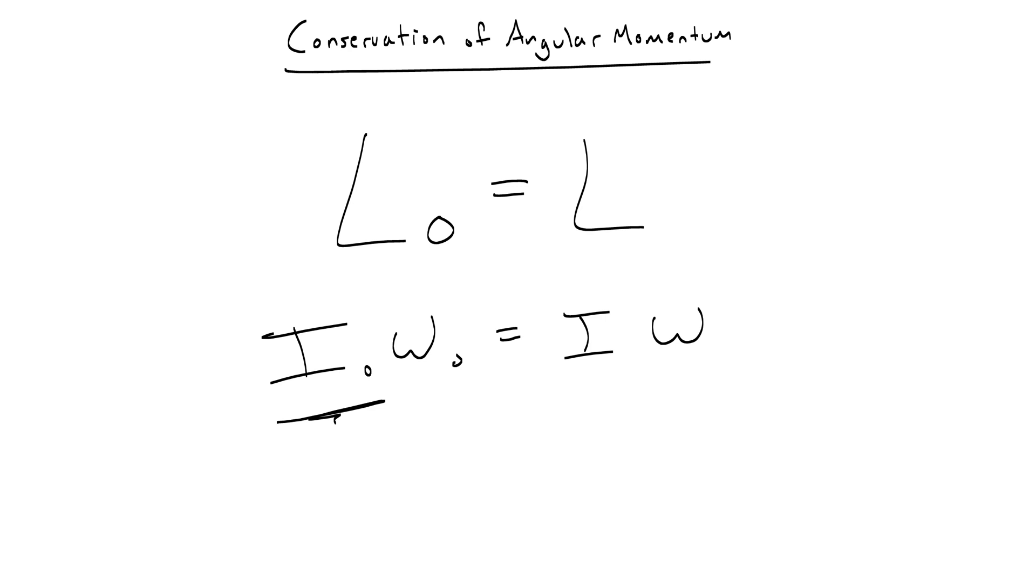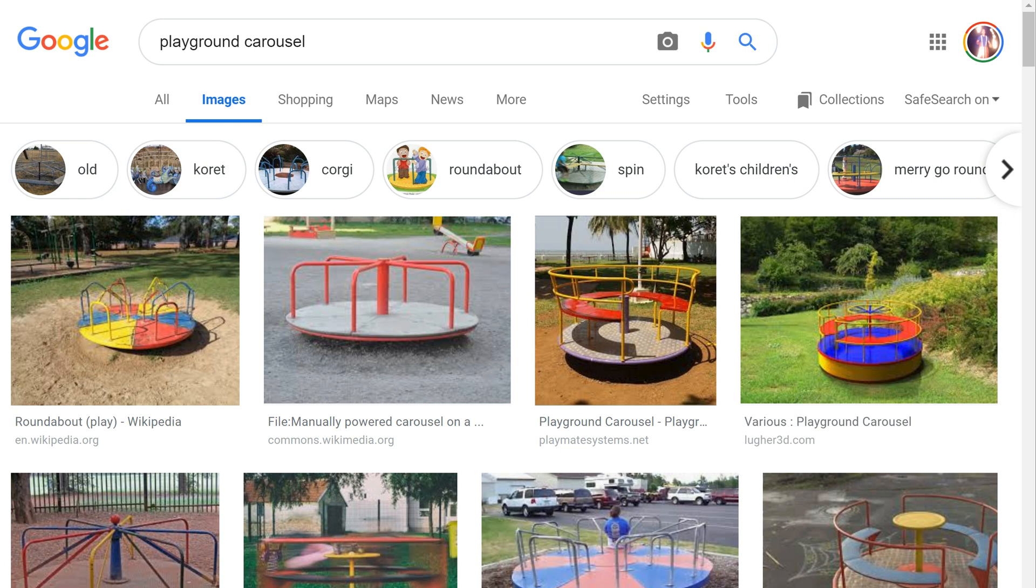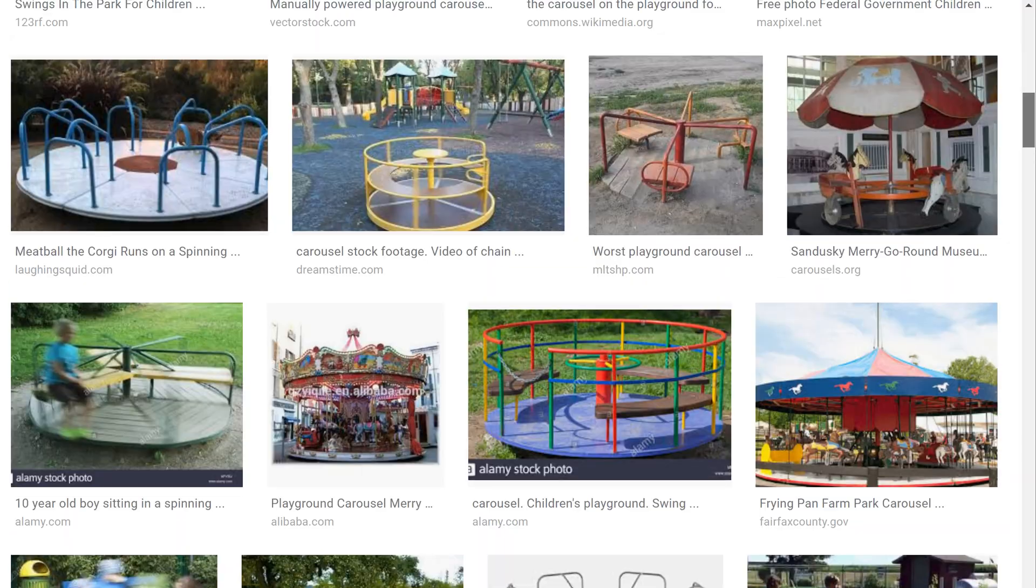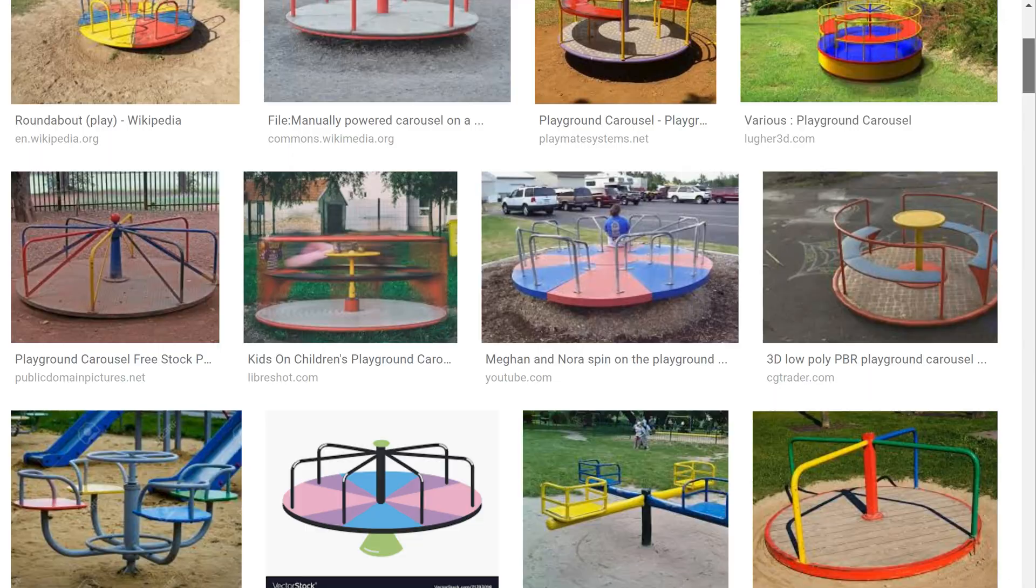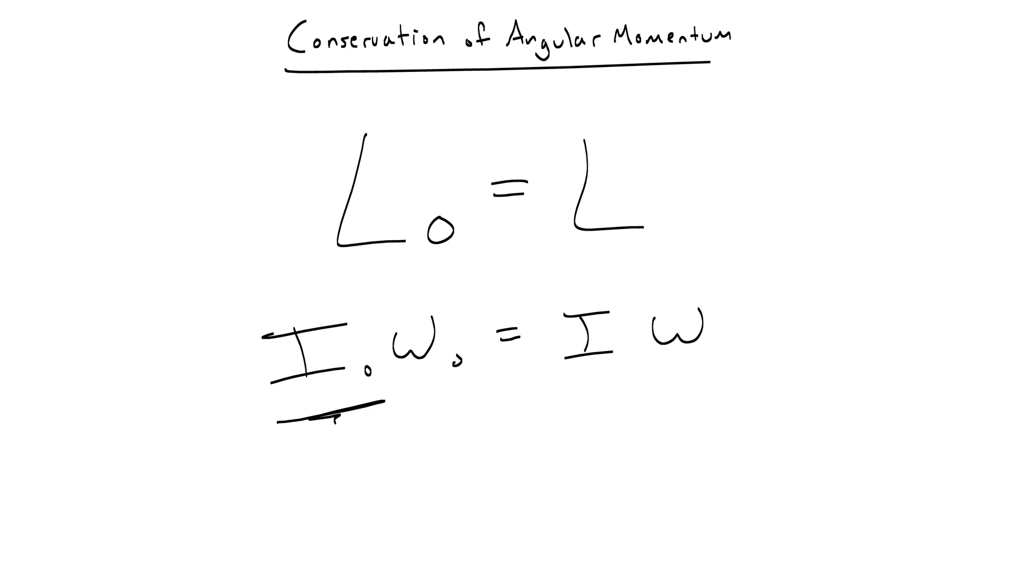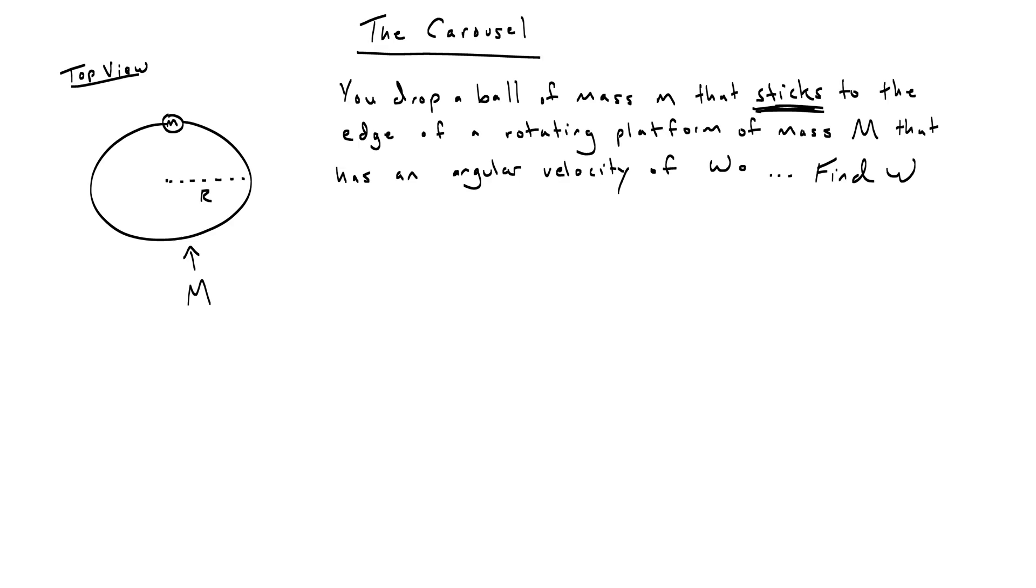Okay, so let's do an example. This is a classic problem called the carousel problem. Now, if you don't know what a carousel is, it's just this weird thing. You can have a fancy carousel with horses and stuff like that, but you're probably more familiar with this rotating platform that you used to use to see which of your friends was the weakest. So, a carousel is just a platform that rotates, sometimes it could be a turntable, like for a record player, something like that. The AP test loves these things, and the carousel is usually not called a carousel, it's just called a rotating platform. So here we have, you drop a ball of mass M that sticks to the edge of a rotating platform of mass capital M that has an angular velocity of omega naught. We're going to find omega.